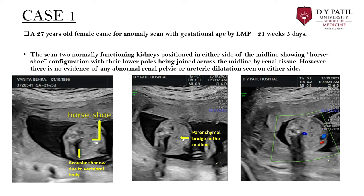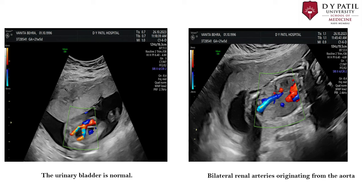In the image, we can see two isoechoic structures joining in the midline, along with the vertebral shadow. The joining is seen just anterior to the vertebral body. In the second image, there is a parenchymal bridge visible in the midline. The urinary bladder appears normal, and umbilical vessels are visible on either side. On sagittal view, renal vessels are seen arising from the aorta on either side, indicating each kidney receives individual blood supply.